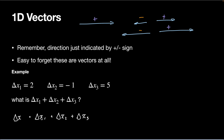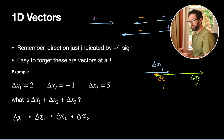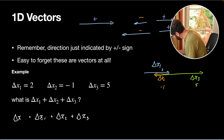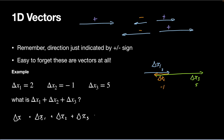Let's draw a picture. Delta x1 is 2, so we go 2 to the right. Then delta x2 is negative 1, so we go back halfway. Then delta x3 is 5, so we go 5 to the right. The head-to-tail idea works in one dimension as well — just all flattened together. Adding those displacements: 2 minus 1 plus 5 equals 6. The overall displacement, from beginning to end, is delta x equals 6.